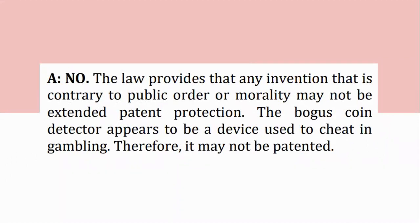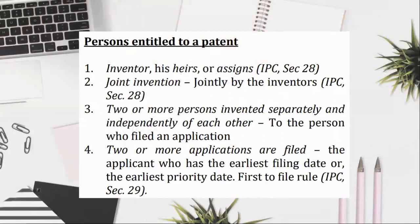Ownership of a patent — persons entitled to a patent: (1) inventor, his heirs, or assigns, IPC, Section 28; (2) joint invention — jointly by the inventors, IPC, Section 28; (3) two or more persons who invented separately and independently of each other — to the person who filed an application; if 2 or more applications are filed, the applicant who has the earliest filing date or the earliest priority date. First-to-file rule, IPC, Section 29.